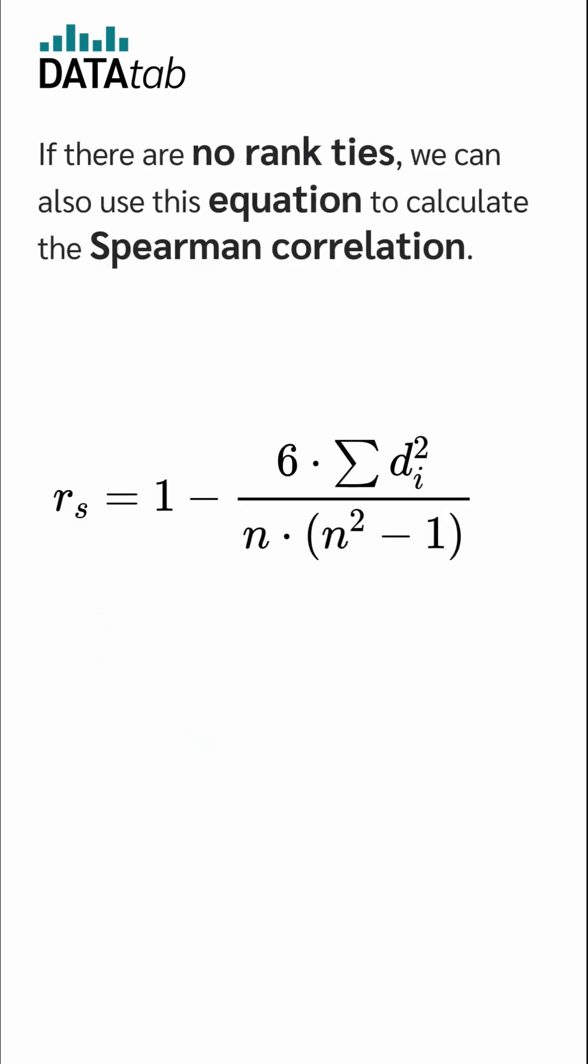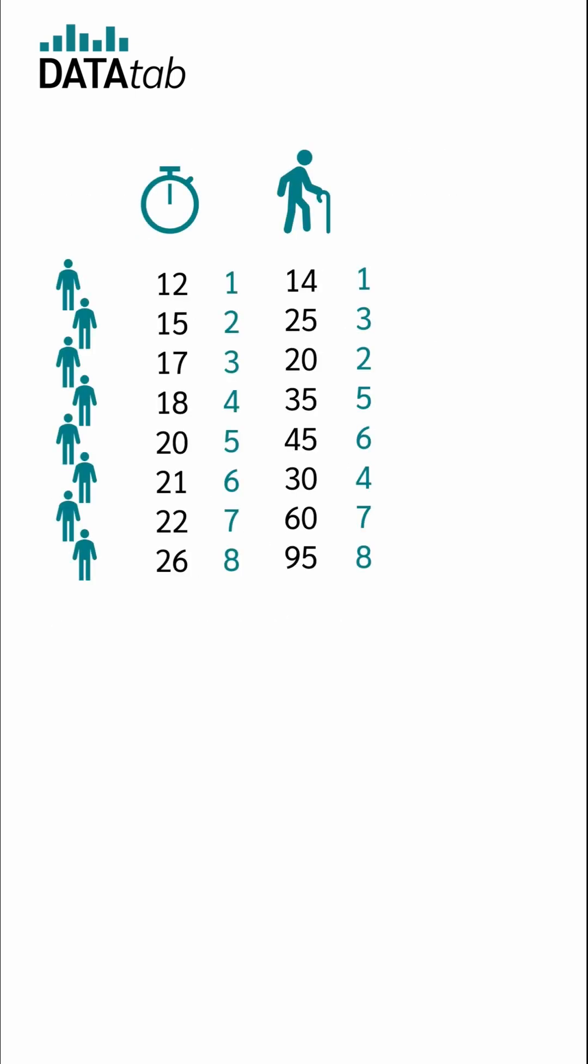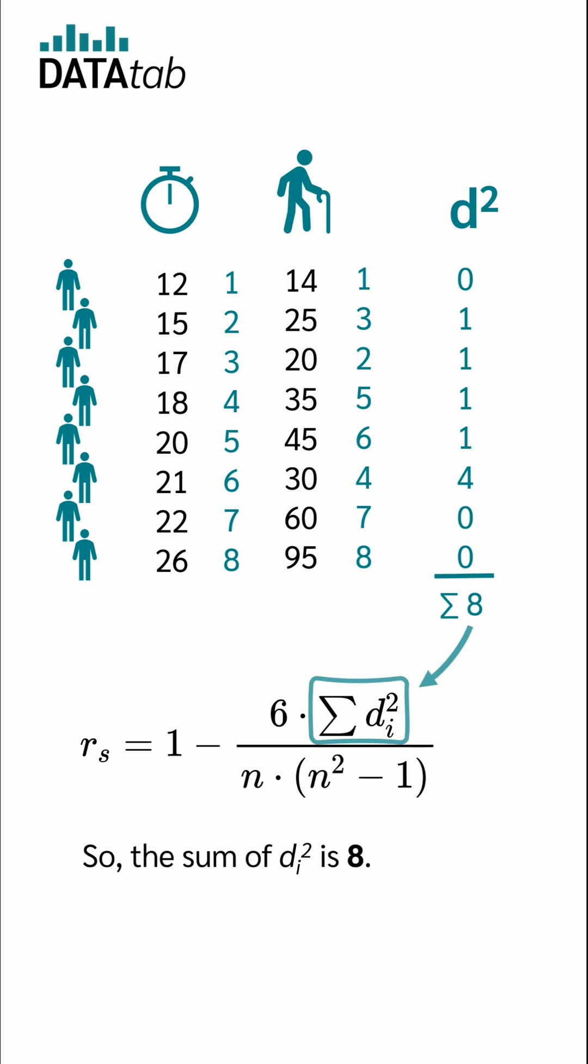If there are no rank ties, we can also use this equation to calculate the Spearman correlation. n is the number of cases and d is the difference in ranks between the two variables. Referring to our example, we get the different d's with this. 1 minus 1 which is 0, 2 minus 3 is minus 1, 3 minus 2 is 1, and so on. Now we square the individual d's and add them all up. So the sum of d i squared is 8.